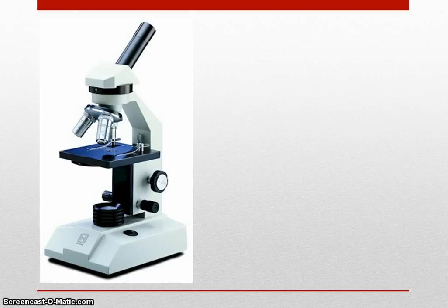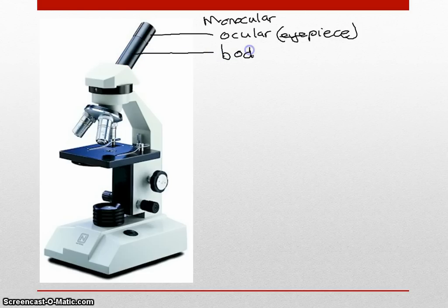This is a monocular microscope because it only has one of these. This at the top is known as the ocular or eyepiece lens. This is the tube that it sits in, known as the body tube.